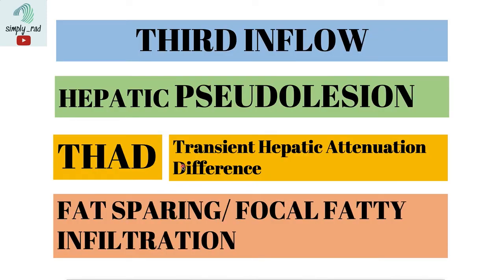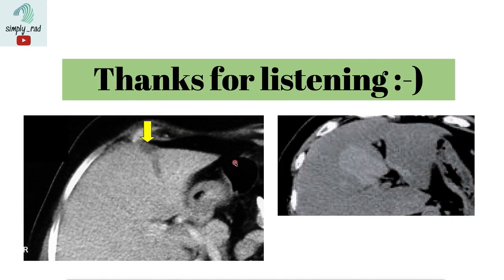Going back to our first slide, we now know that third inflow is a physiology which explains pseudolesions, focal fat sparing, and focal fatty infiltration. We also understand that pseudolesions are a type of TADS. If one sees a pseudolesion or a TADS, we are prompted to think and check for alterations of blood flow in the liver. That's it for now — thank you very much for listening.